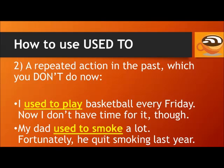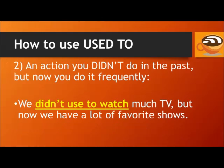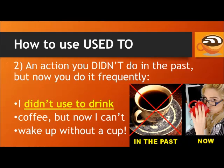We can also use 'used to' for a repeated action in the past which you don't do now. For example: I used to play basketball every Friday — now I don't have time for it, though. My dad used to smoke a lot; fortunately, he quit smoking last year. Use the negative form 'didn't used to' for an action you didn't do in the past but now do frequently. For example: We didn't used to watch much TV, but now we have a lot of favorite shows. I didn't used to drink coffee, but now I can't wake up without a cup.